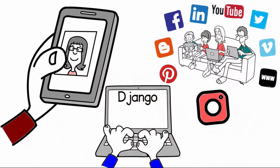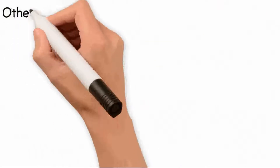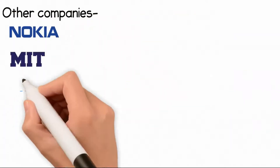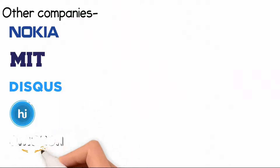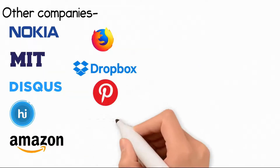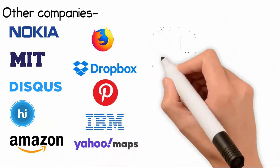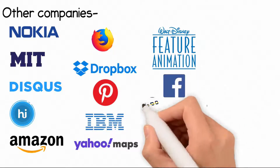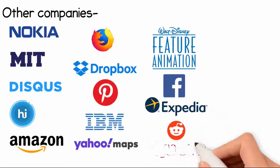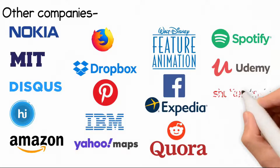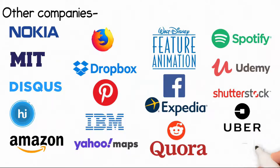The photo-sharing platform Instagram was built on top of the Django web framework, which is entirely written in Python. Other companies that use Python include Nokia, MIT, Disqus, Hike, Amazon, Mozilla, Dropbox, Pinterest, IBM, Yahoo Maps, Walt Disney Feature Animation, Facebook, Expedia, Reddit, Quora, Spotify, Udemy, Shutterstock, Uber, and YouTube.